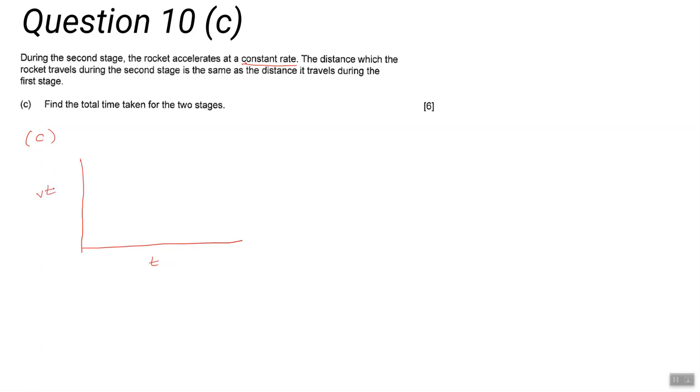We know that the velocity is increasing at a constant rate. Unlike before, this graph is just for the second stage, not the first stage. I haven't plotted the graph for the first stage.